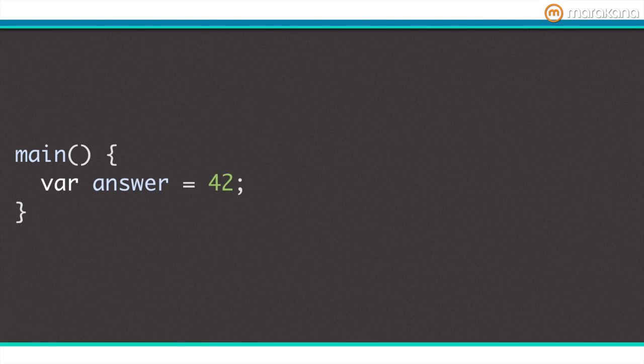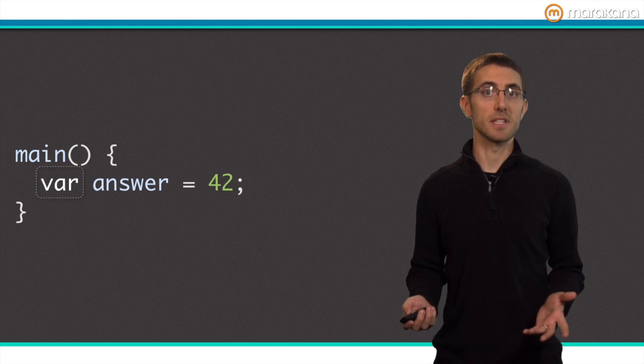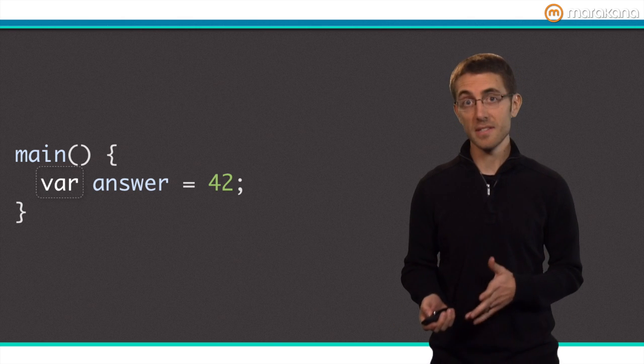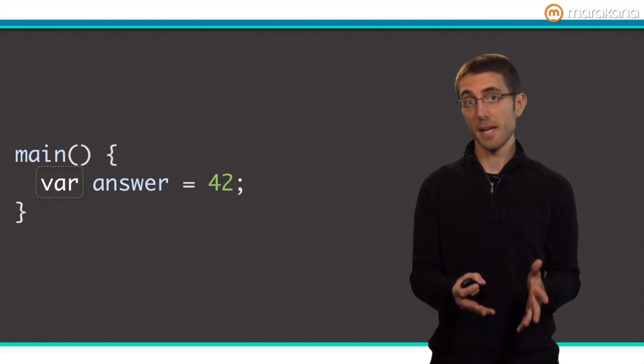This is an example of an untyped dynamic variable. Notice how I use var to denote a dynamic variable. Obviously, the object pointed to by the variable is an instance of a specific class, in this case an int, but the variable itself simply has the dynamic type.